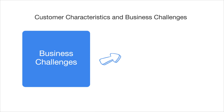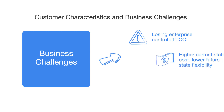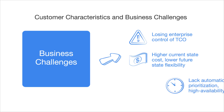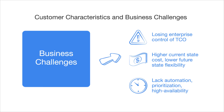It experienced business challenges around losing enterprise control of the TCO for SAS environments, which not only posed a threat to higher current state costs, but also decreased flexibility and scalability of the future state. The organization also lacked automation, prioritization, and high availability capabilities, which created inefficiencies and delays in reporting.